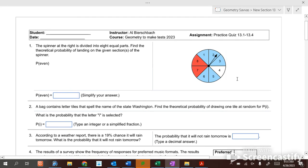Alright, so you have to spin a spinner. What's the probability of getting an even number? How many even numbers are on there? Four. How many total numbers? So if you simplify your answer, you get one half.